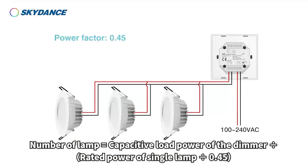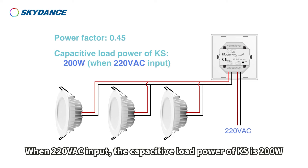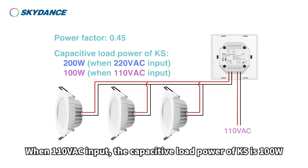Number of lamps equals capacitive load power of dimmer divided by rated power of single lamp, divided by 0.45. When 220 volts input, the capacitive load power of KS is 200 watts. When 110 volts input, the capacitive load power of KS is 100 watts.